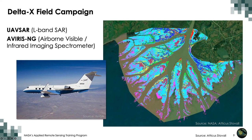Wax Lake Delta is also the focal site for the Delta X field campaign led by PI Marc Simard. In this mission, UAV SAR—an L-band synthetic aperture radar sensor—and AVIRIS-NG, a hyperspectral imager, are combined to create a map of ecosystem structure and species assemblage classification. The different colors on the map represent different clusters of ecosystem types in this delta, all from hyperspectral data classification. The red box indicates our small subset study area for this case study.